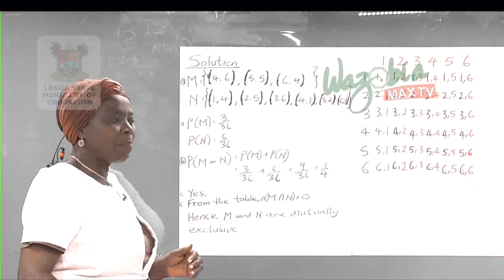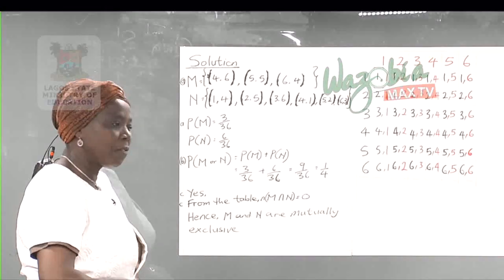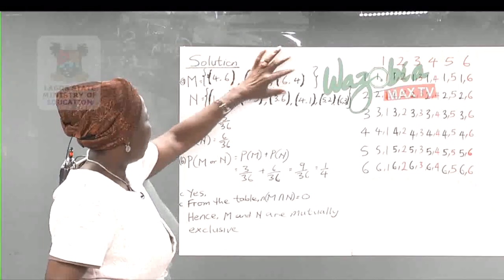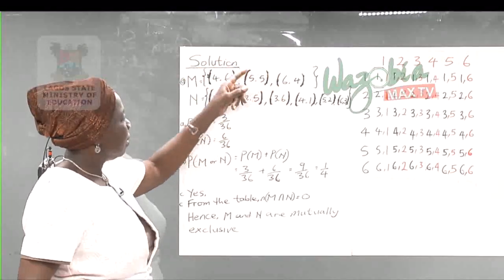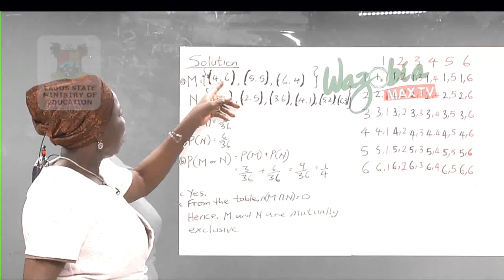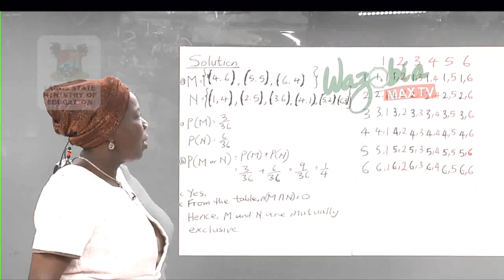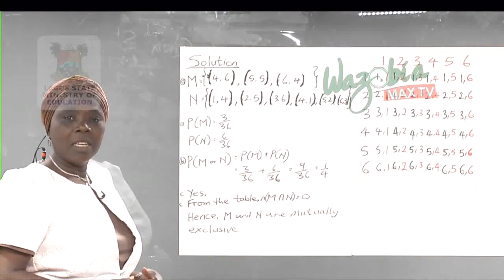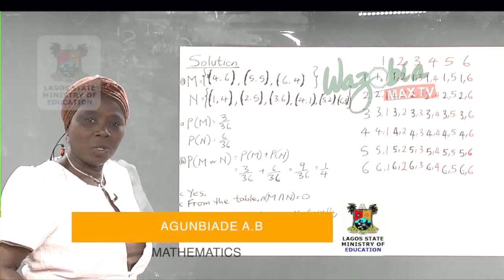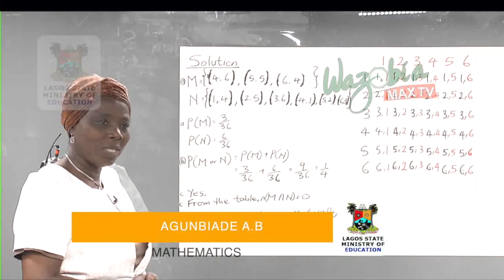The last part asks: are M and N mutually exclusive? Yes, they are. Looking at the elements, no member of M appears in N and none of N appears in M. So M intersection N is empty, and once there is no intersection, they are automatically mutually exclusive events.